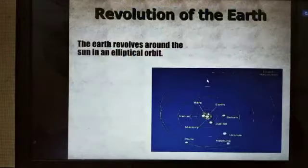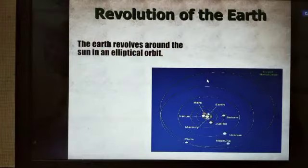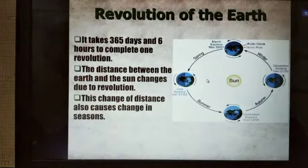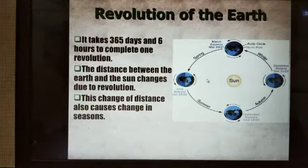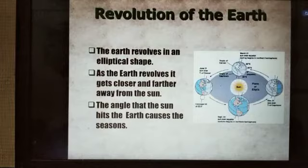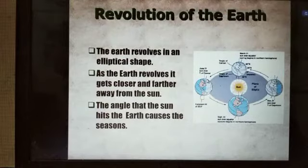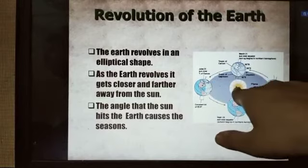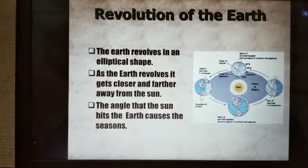Revolution: the Earth revolves in an elliptical orbit. It takes 365 days to complete. The distance between the Earth and sun changes during revolution, and this change of distance causes the seasons. As the Earth gets closer and farther away from the sun, the angle that the sun hits the Earth causes the seasons.